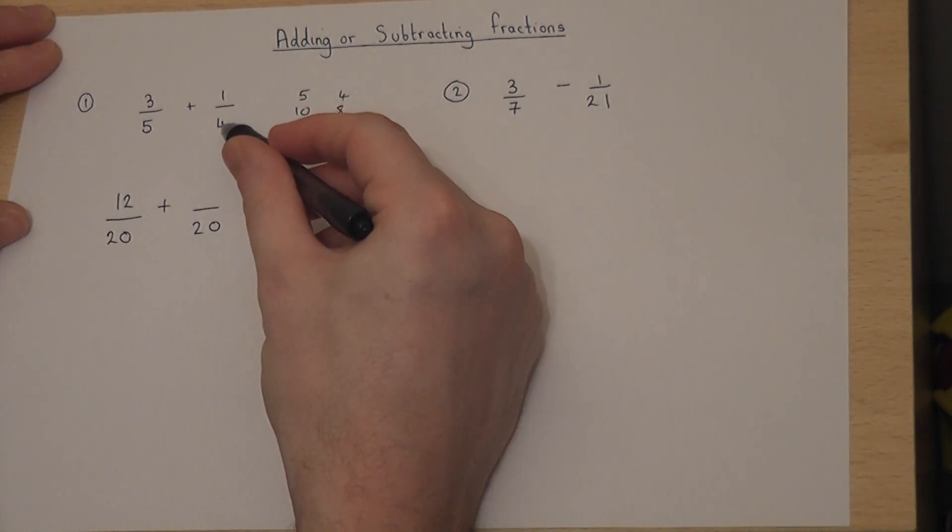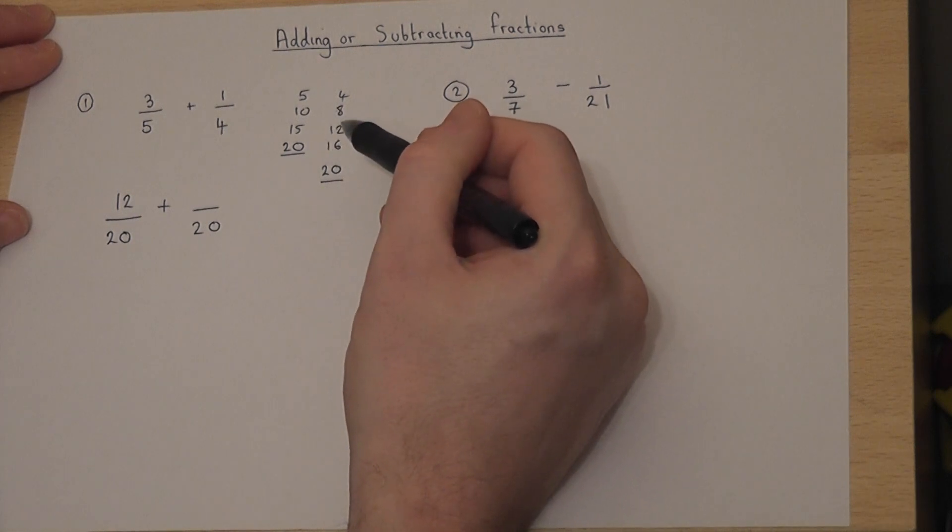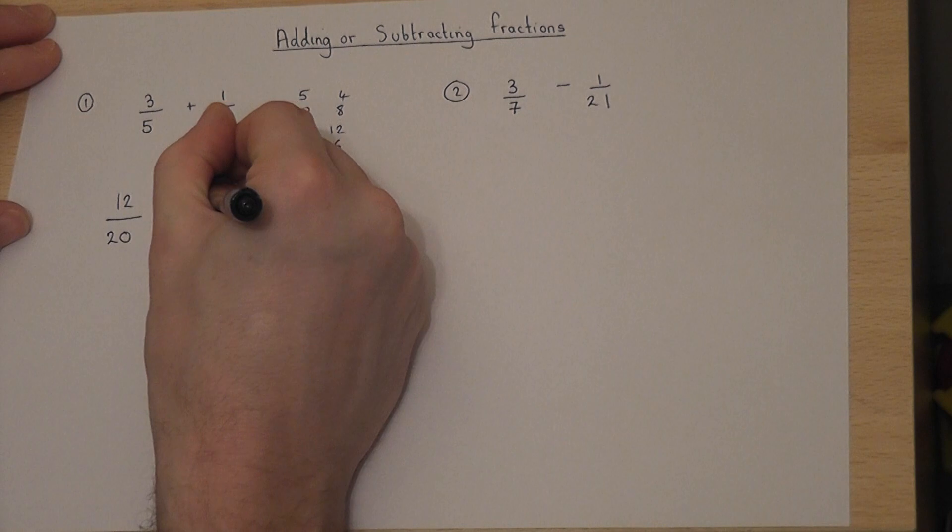The second fraction has been multiplied by 5 (1, 2, 3, 4, 5), so I also multiply the top by 5. 5 times 1 is 5.